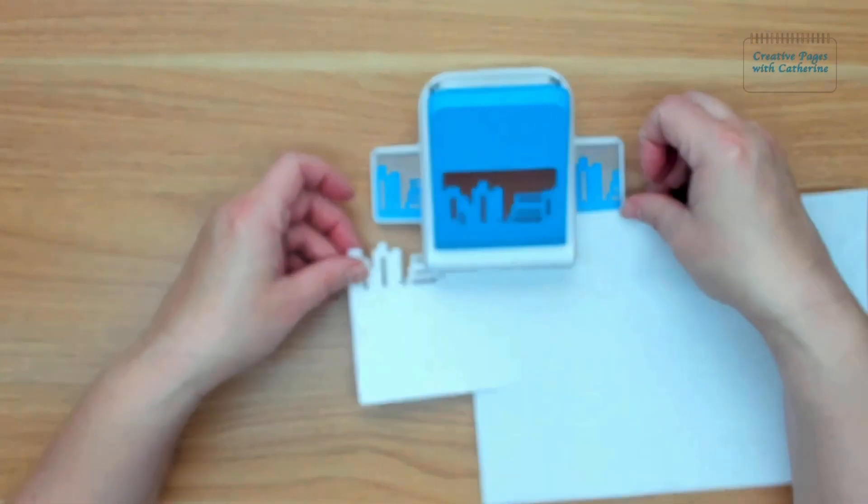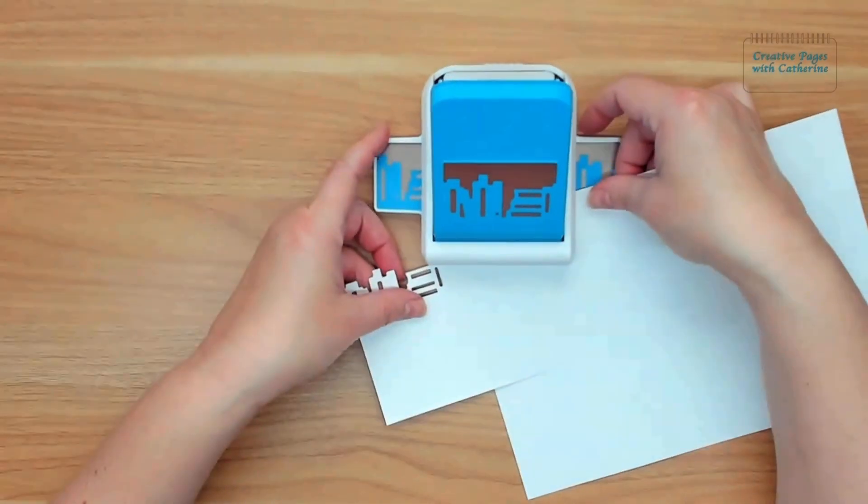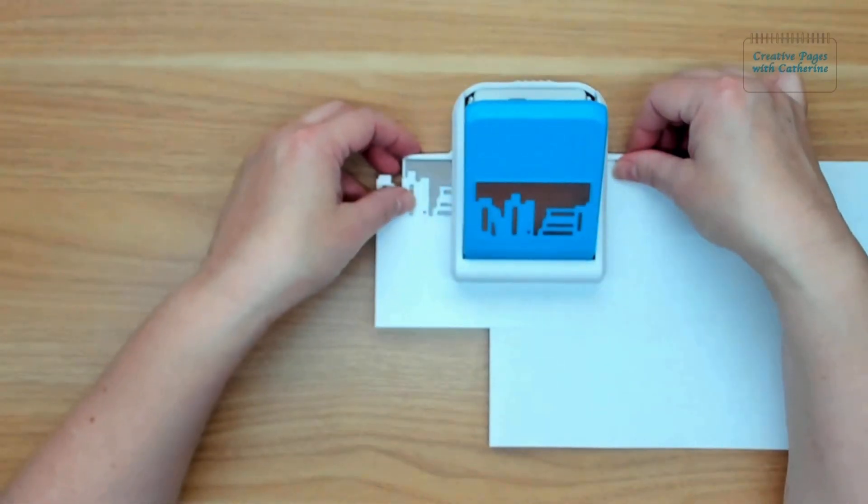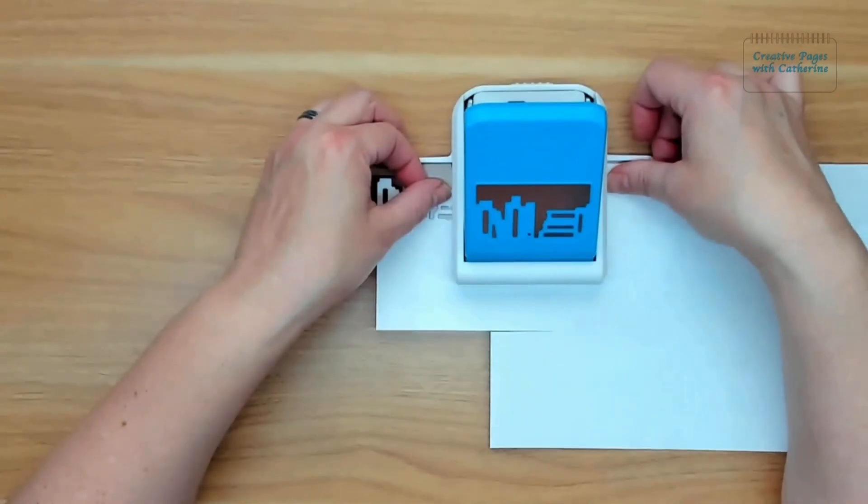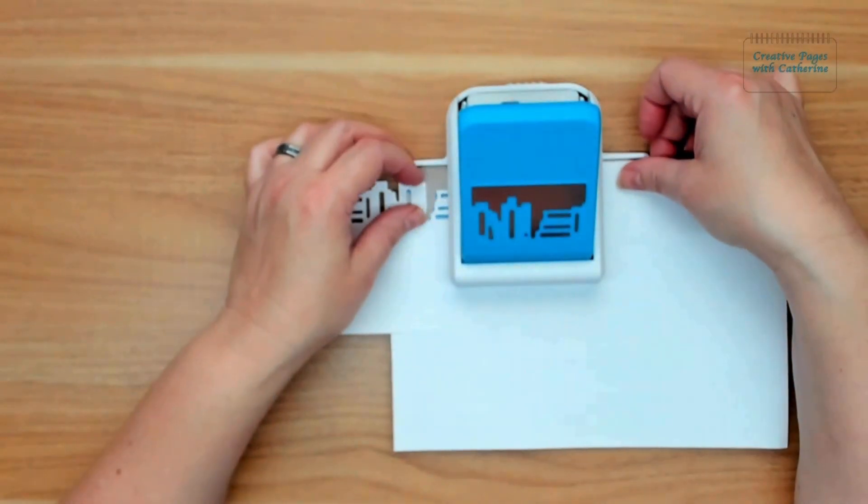Then you pull it out a little bit, scoot it over, and line up your picture here on either side of your punch. You can punch either from the right or from the left. And here we go.